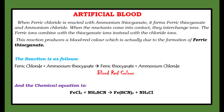When ferric chloride is reacted with ammonium thiocyanate, it forms ferric thiocyanate and ammonium chloride. When the reactants come in contact, they interchange ions. The ferric ions combine with the thiocyanate ions instead of the chloride ions. This reaction produces a blood red color, which is actually due to the formation of ferric thiocyanate.